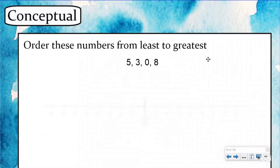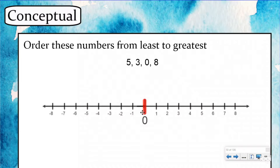Our problem says order these numbers from least to greatest, and it gives us four numbers: five, three, zero, and eight. Although most of you could do this without showing any work, let's pull out our number line because that's really going to help you understand what our key thought is today. Here I have zero, three, five, and eight.